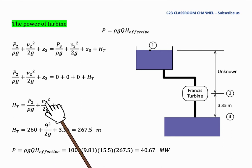The velocity V2 is nine meters per second. And the value of Z2 here is equal to - I'm sorry, the Z2 here is 3.35 meters. So we could calculate the value of head of turbine here is equal to 267.5 meters. After this, we could calculate the power of turbine by using this equation. And then we substitute all the values here. And then we get it is around 40.67 megawatts.